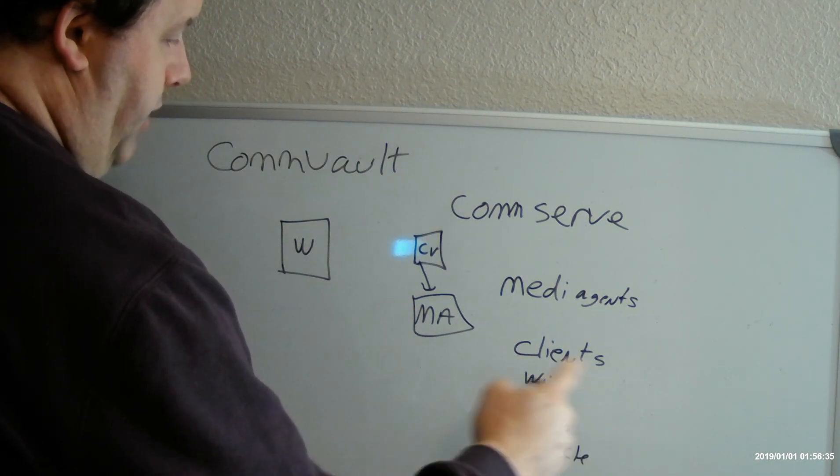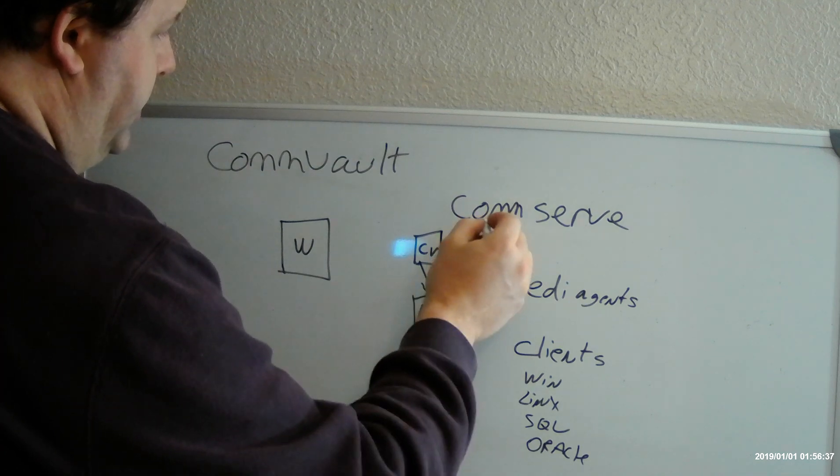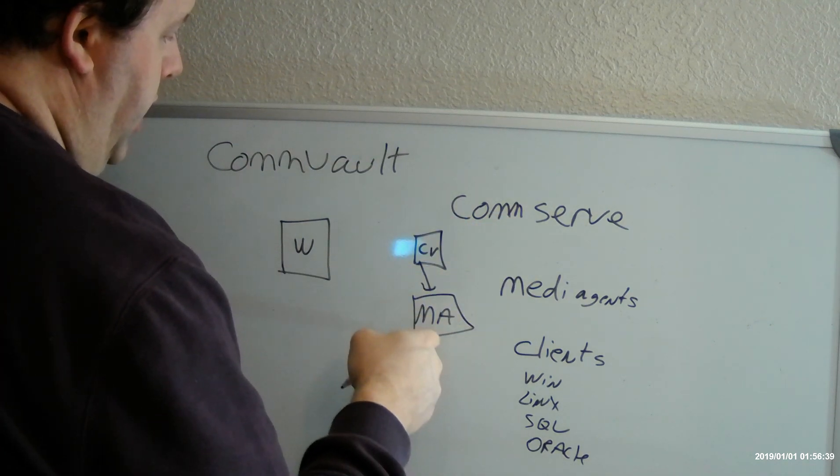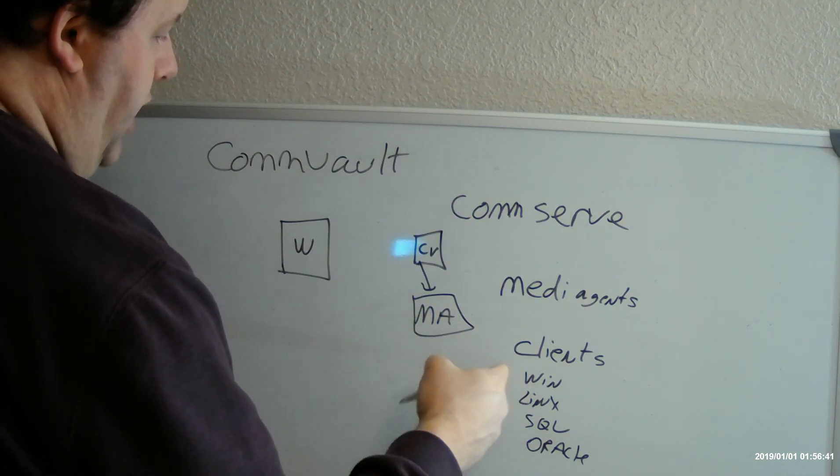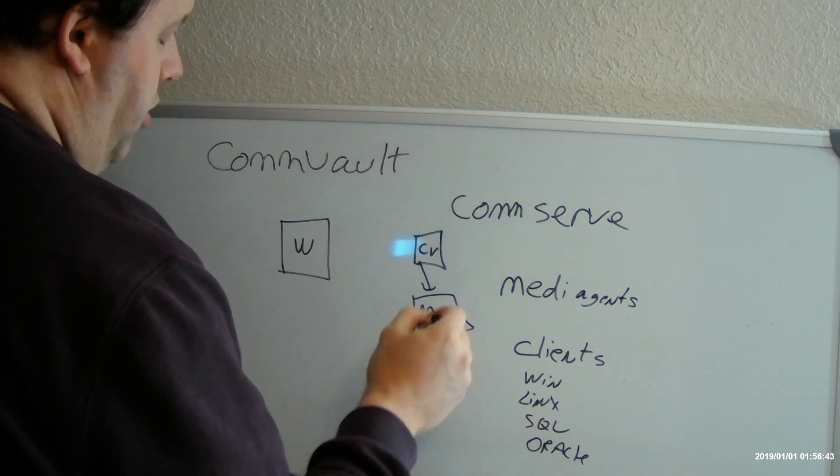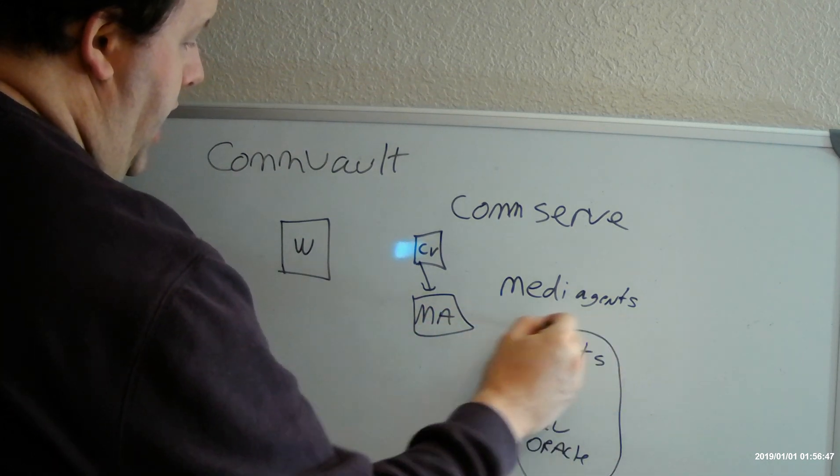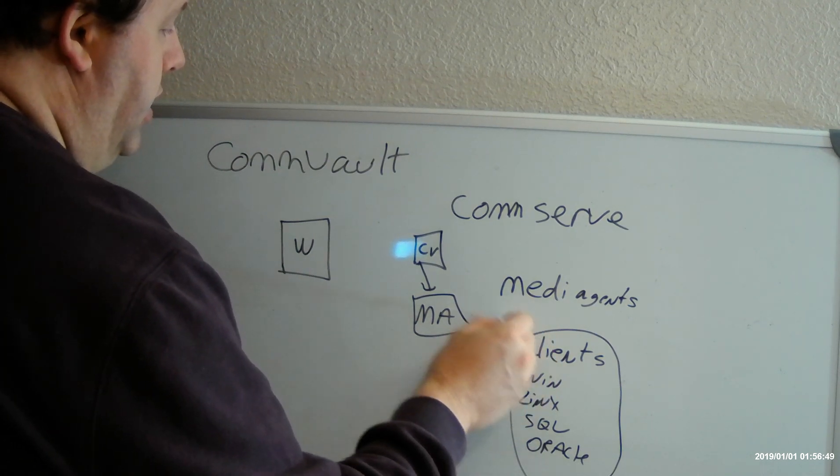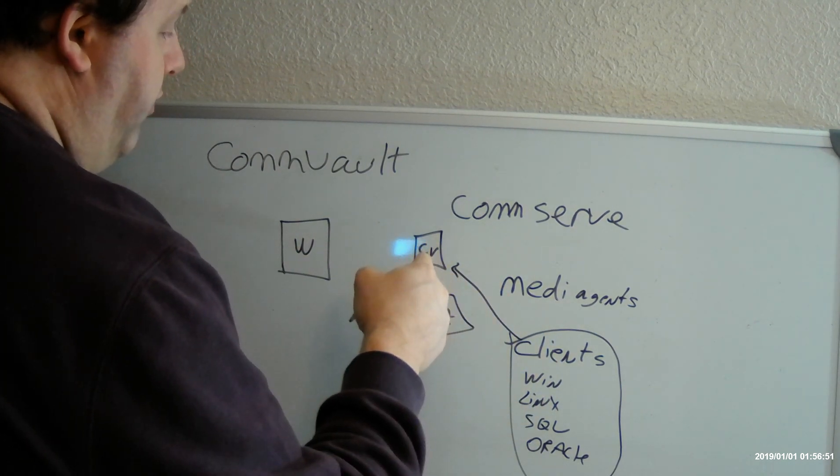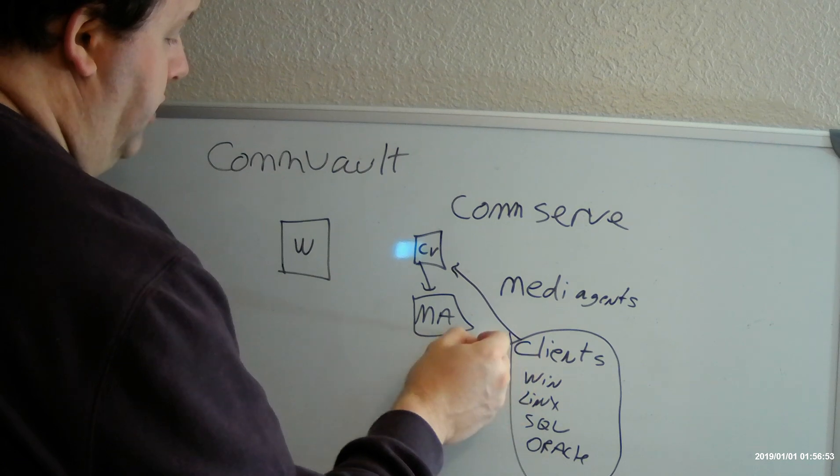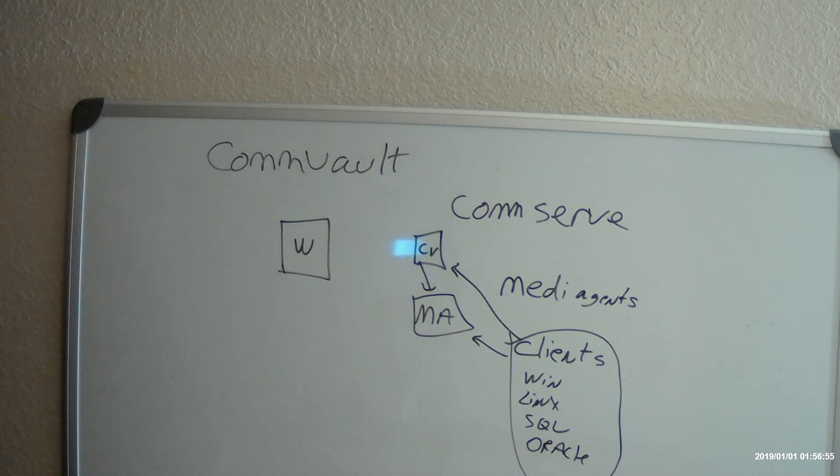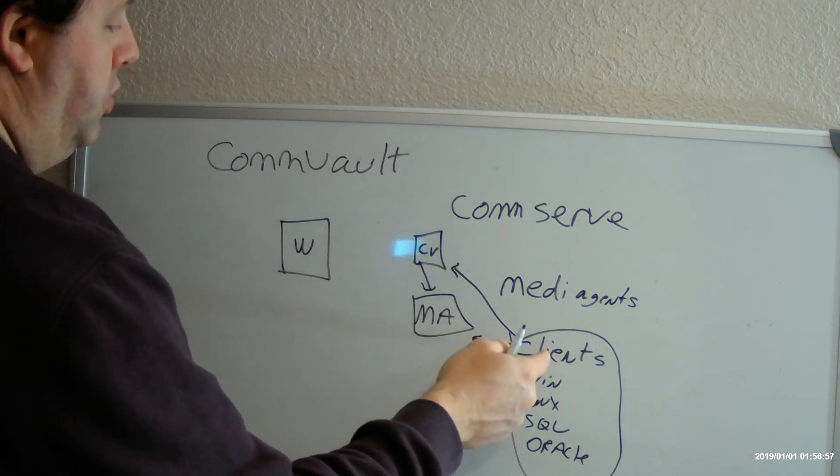What happens is Commvault says hey media agent, I need you to back up this client. In order for that to happen, all of these clients have to have the ability to talk to both the commserve and the media agent. So you should have connectivity between the clients and the commserve, and the clients and the media agent.